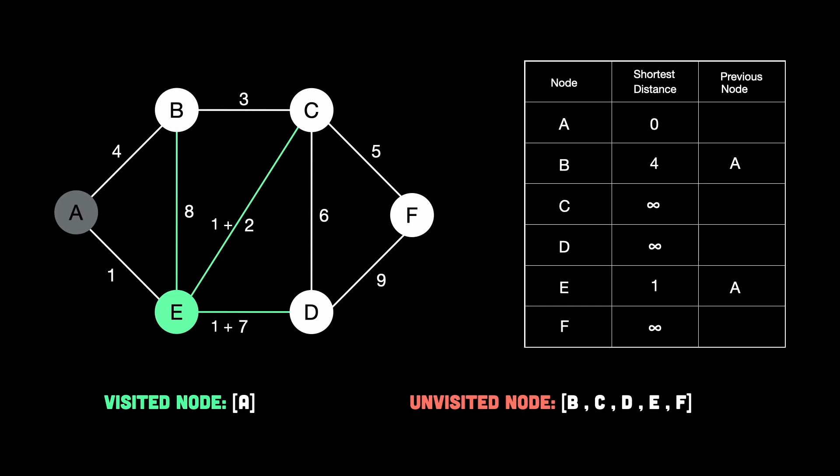Then next, E to C costs 2. So the total is 1 plus 2, which is 3. And C currently has infinity. And 3 is definitely better than infinity. So we update C to 3. And note that C's previous node is E. Then the distance from E to D costs 7. So total is 1 plus 7, which is equal to 8. Again, that's better than infinity. So we update D to 8. And note that D came from E. We are done checking all neighbors of E. So now we mark E as visited. And this is how our table looks right now.